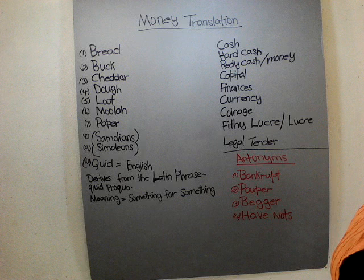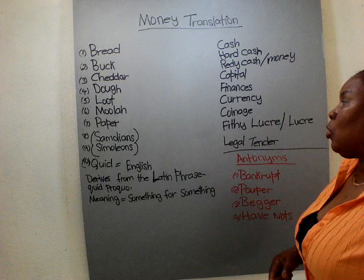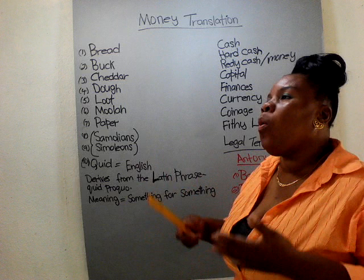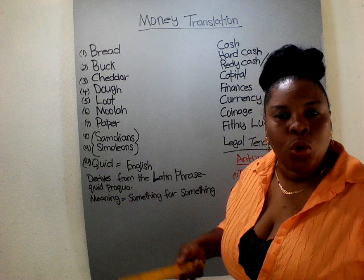Finances is the next term — a professional term we use for money that the bank also uses. Currency — when the money is being translated from one currency to the next. For example, one US dollar is worth 150 Jamaican dollars or 200 Barbadian dollars, something of that effect. So, currency.